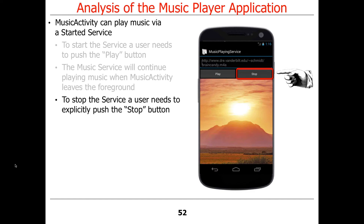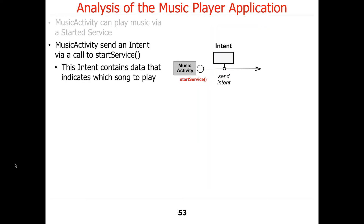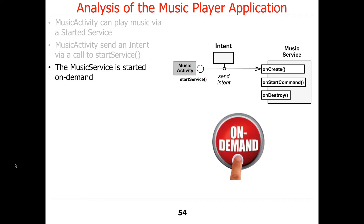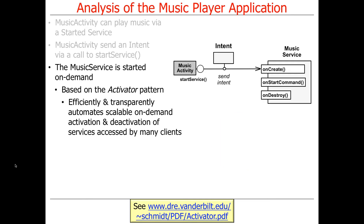Your application will basically redo assignment three, except using services instead of activities. The way this example works: you create an intent — either by the service or the activity — containing data indicating which song to play, in this case a URL. The music service will be started on demand. When someone clicks the button, that starts the service. This uses the activator pattern, which launches things when they're needed.